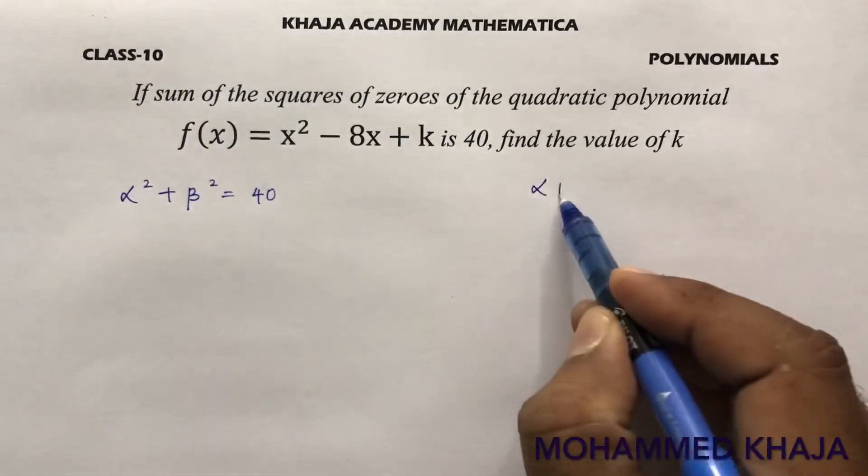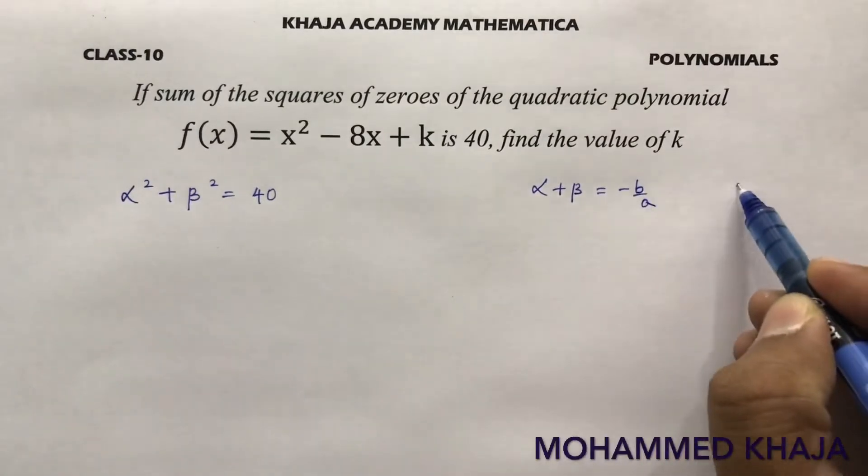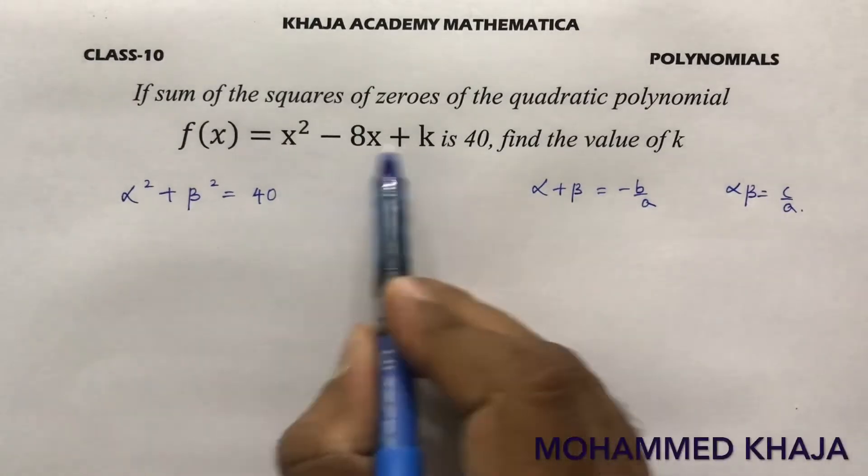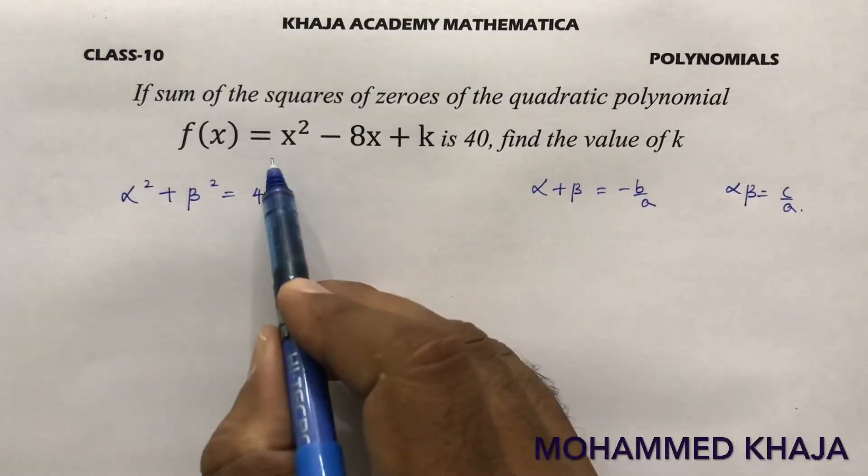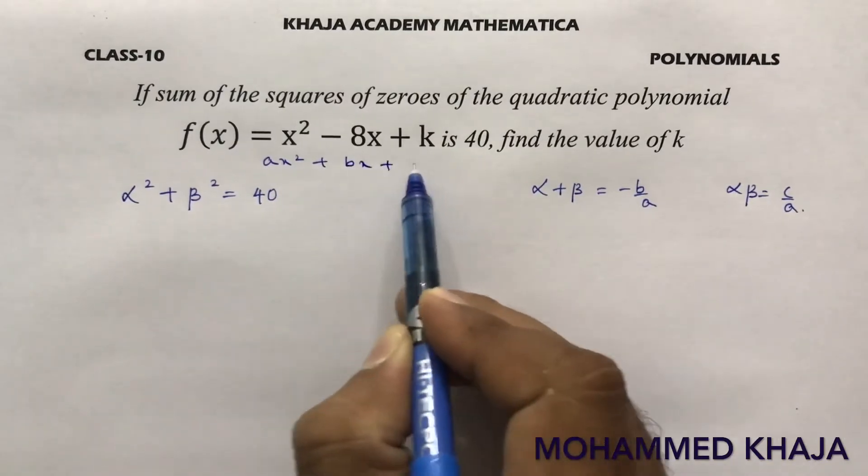But we know the value of alpha + beta, which is nothing but -b/a, and alpha * beta is c/a. See, because we cannot find directly the zeros alpha and beta here. If we compare with the standard equation which is ax² + bx + c.